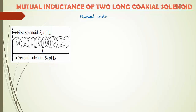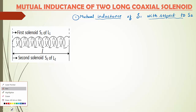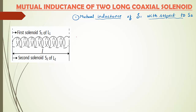Now let us derive the expression. First I am going to consider mutual inductance of solenoid S1 with respect to S2 — this is Case 1. If you understand this first case, then you can easily write the answer for the second case. We know that flux linkage equals N × φ. The product of number of turns and magnetic flux gives the flux linkage.